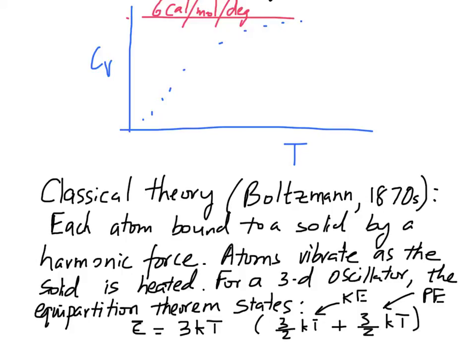Assuming each one constitutes a three-dimensional oscillator, the equipartition theorem states that the average energy of each oscillator is 3kT. The factor 3 comes from the fact that it's a three-dimensional system, and kT is composed of one-half kT from the kinetic energy and another half kT from the potential energy.